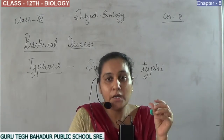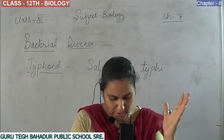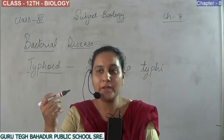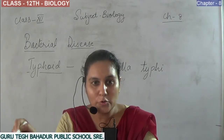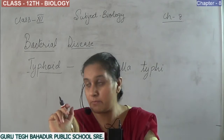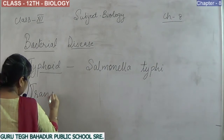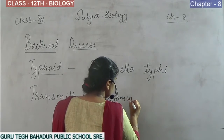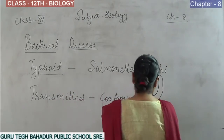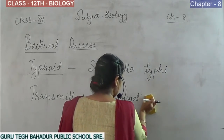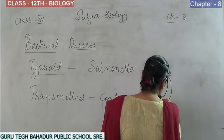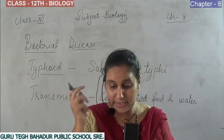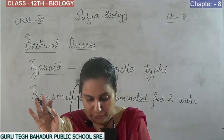Salmonella typhi first affects the small intestine of the human body, and then migrates to various parts of the body to spread the disease. This disease is transmitted by contaminated food or water — that is, food or water containing the Salmonella typhi bacteria.